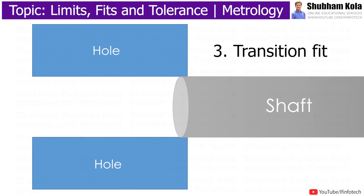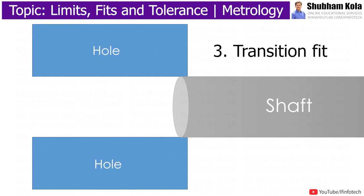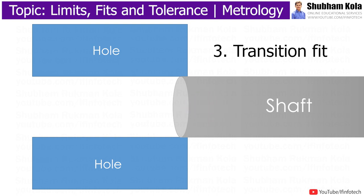Transition fit results in either clearance fit or interference fit, depending on the actual value of individual tolerances of mating components. Transition fits are a compromise between clearance fit and interference fit. They are used for applications where accurate location is important but either a small amount of clearance or interference is permissible. It requires pressure to force the shaft into the hole and gives a light assembly. It is used for fixing keys and pins.